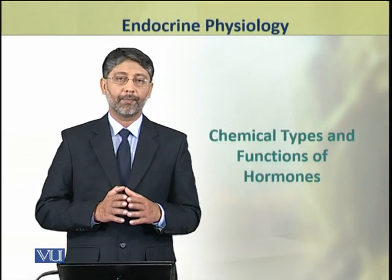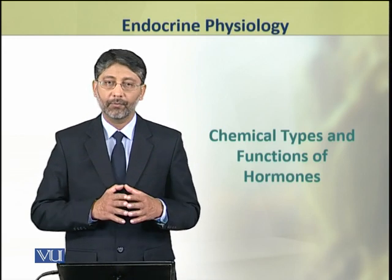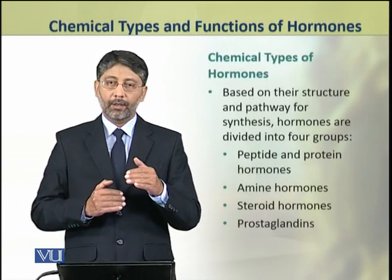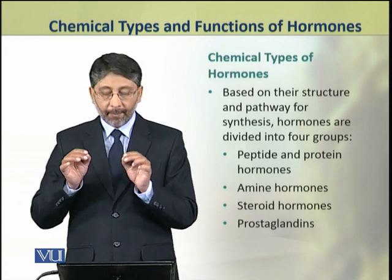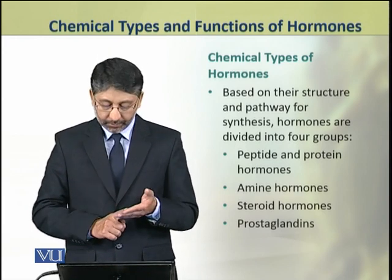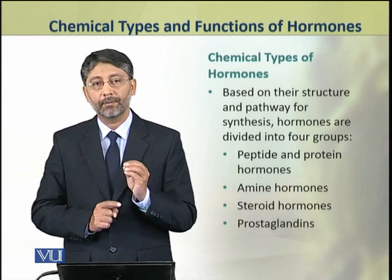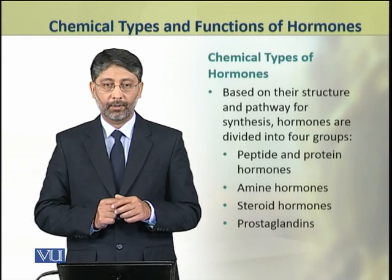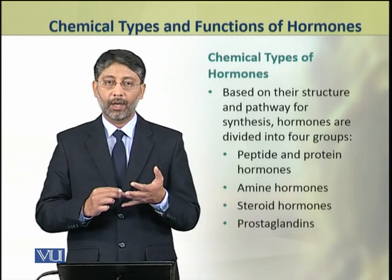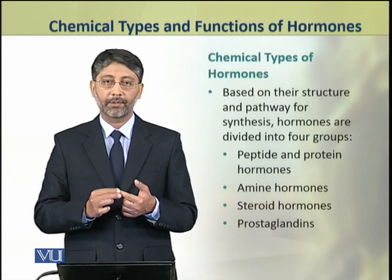Dear students, in this topic we shall discuss the various chemical types of hormones and their functions. Based on their chemical structure and pathway of synthesis, hormones are classified into four chemical types: number one, the peptide and protein hormones; number two, amine hormones; number three, steroid hormones; and number four, prostaglandins.